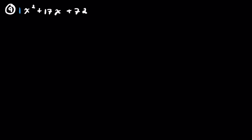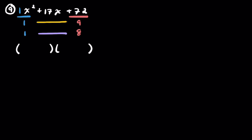Problem 9: x squared plus 17x plus 72. Leading coefficient of 1, positive 72. I'm going to go with 9 and 8 — 9 times 8 is 72, and 9 plus 8 is 17. Opening up the empty parentheses, putting x and x, then placing plus 9 and plus 8. Outers and inners are both accounted for.